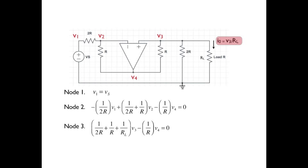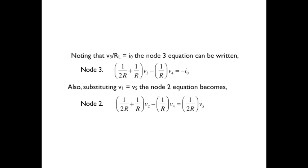At node 3, we have the quantity 1 over 2R plus 1 over R plus 1 over R sub L times V3 and then minus 1 over R times V4 equal to 0. Let's note at this point that the output current I sub 0 equals the node voltage V3 divided by R sub L. So let's denote V sub 3 divided by R sub L as I sub 0 and then take that quantity in the node 3 equation to the right-hand side of the equal sign. That has been done here. The node 3 equation is now rewritten accordingly.